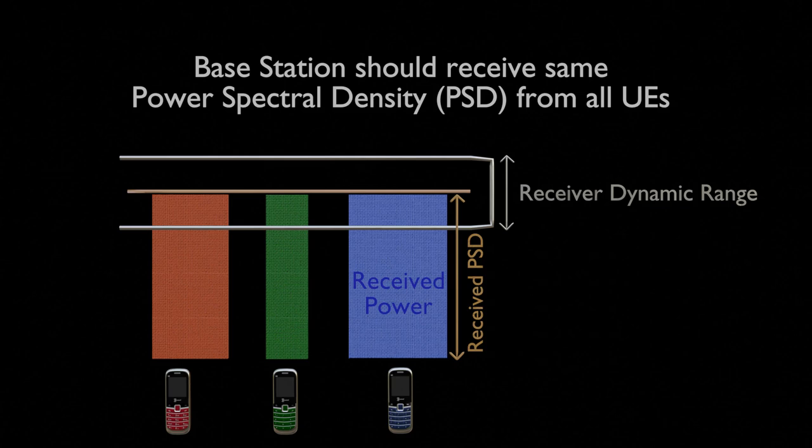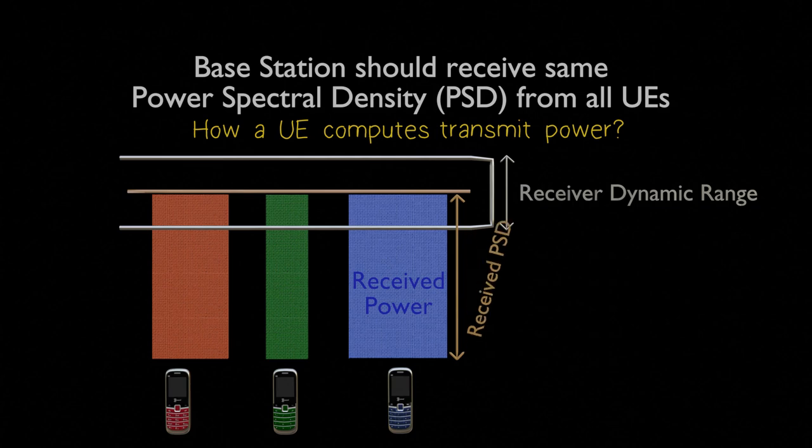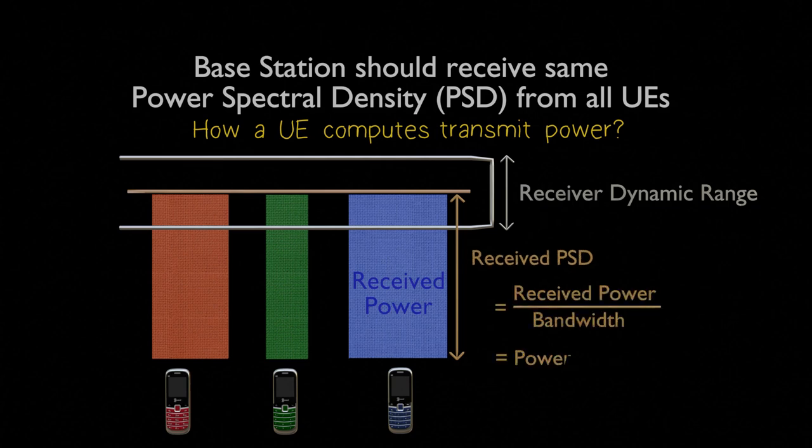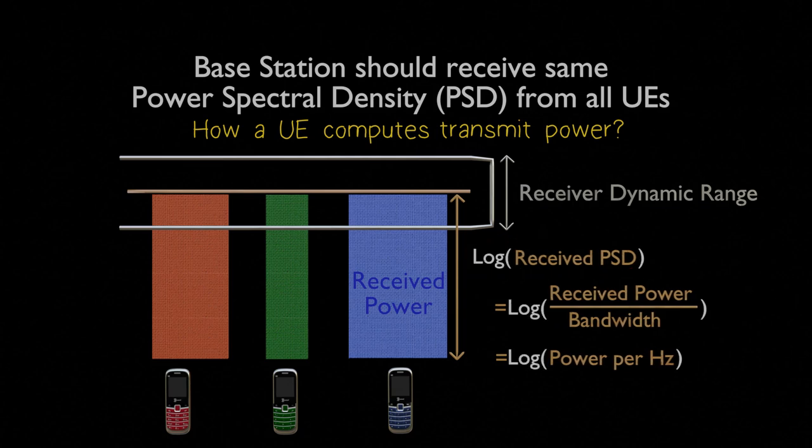In this video, I'll show you how a UE calculates its transmit power so that the base station receives the same PSD from all UEs. Quick note, PSD is the received power divided by bandwidth, or power per hertz. From here on, we will focus just on PSD instead of total power. We'll also represent power in the logarithmic domain because it makes the math easier.